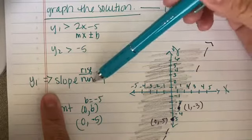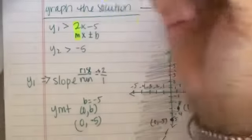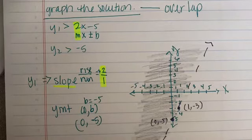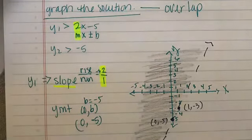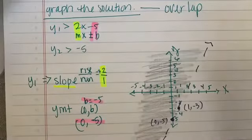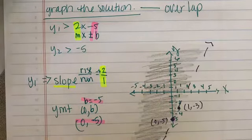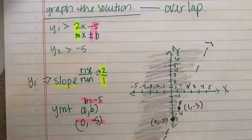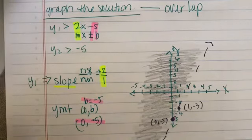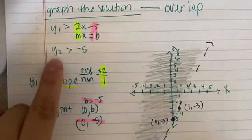For Y1, my slope is rise over run, which equals 2 over 1. My Y-intercept is at (0, B), so B is negative 5, giving me the point (0, negative 5). Then I go up 2 and over 1, so my second point is (1, negative 3). Because Y1 is greater than, I'm going to shade to the left. That was pretty simple.